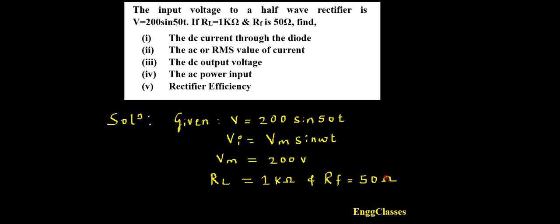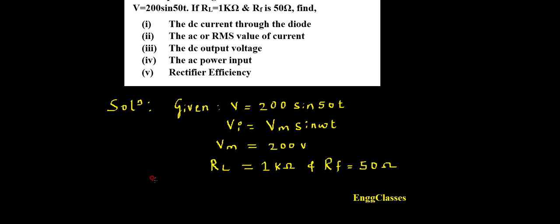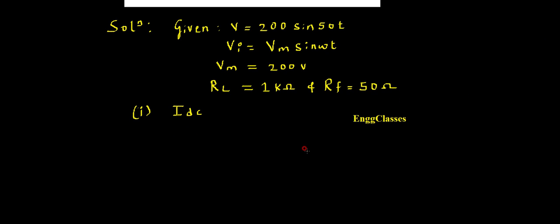Since the forward resistance RF = 50 ohm is quite small compared to RL, we can neglect it. For the first parameter, the DC current IDC through the diode: the formula for a half-wave rectifier is IDC = IM / π. I need to find IM, which I don't know directly.